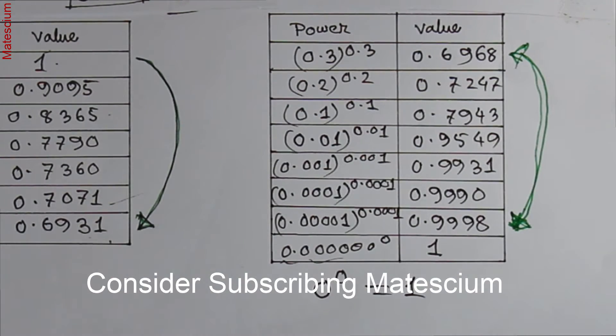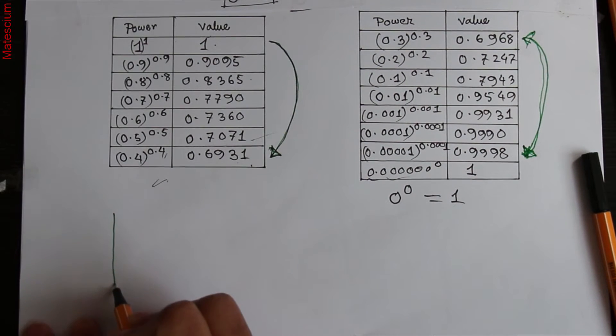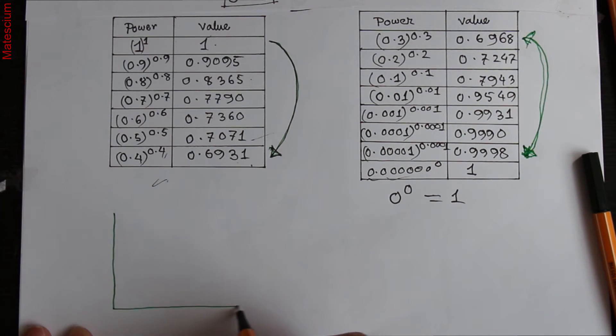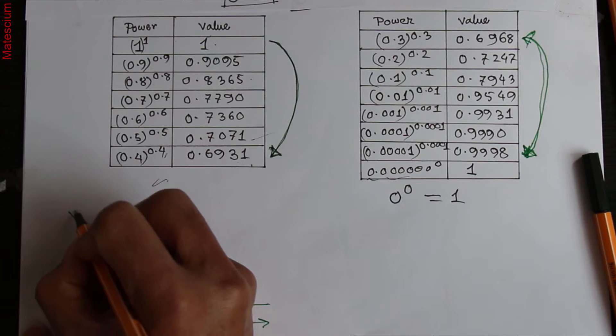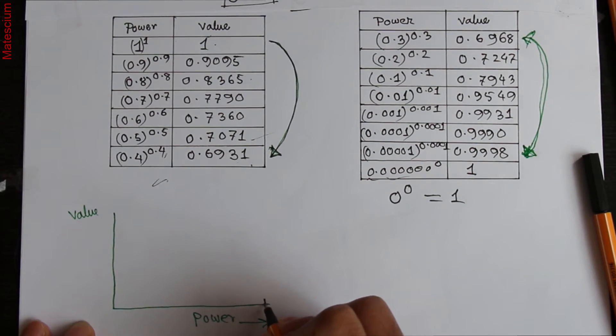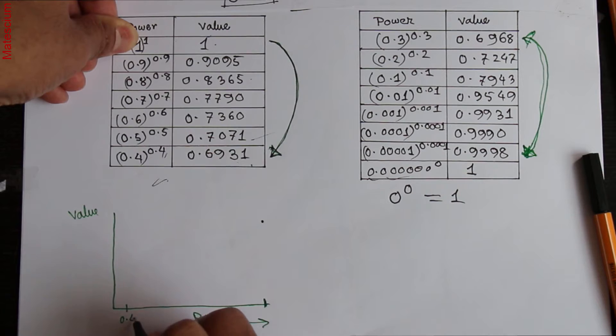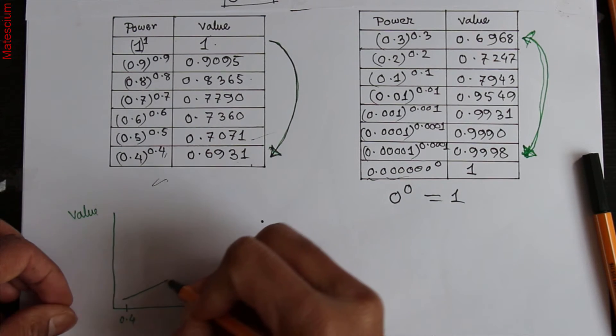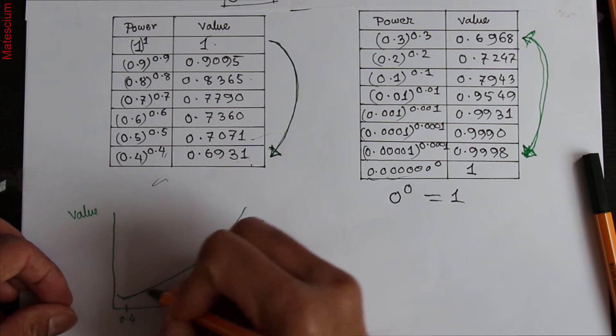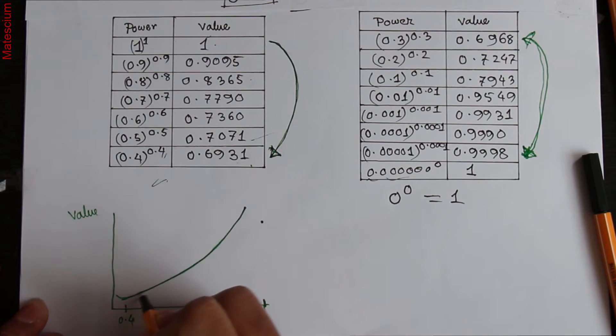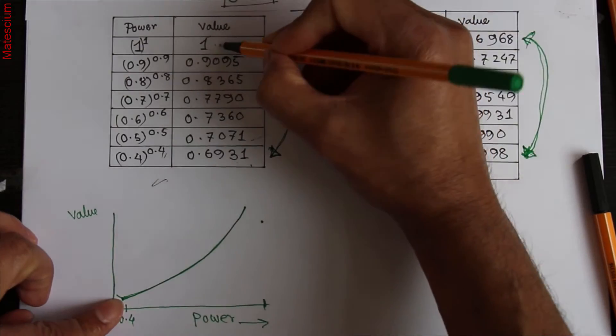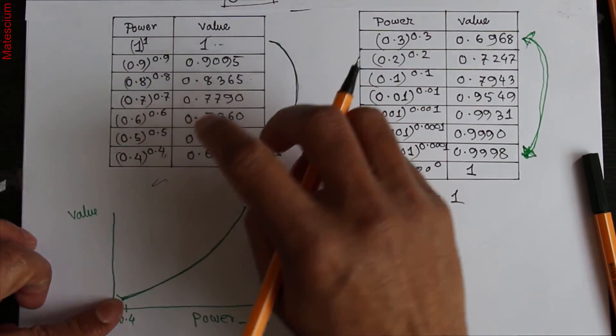If I draw a figure like this way, let's say this is power. X-axis is power and Y-axis is value. This is 1. And if I put here 0.4, then it is like this way. That means I started from here and it gradually decreases exactly to this point. That means this point is here and that point is here.